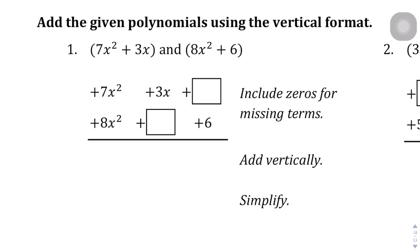7x squared plus 3x, and x squared plus 6. We're going to combine those, and what we're going to do is line them up vertically. The key to lining these up vertically is you want to put the like terms in each column.